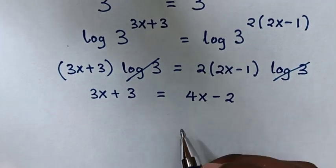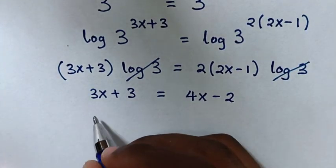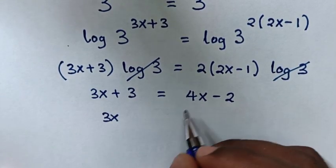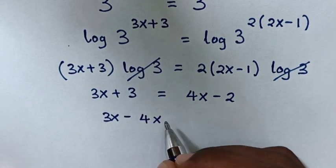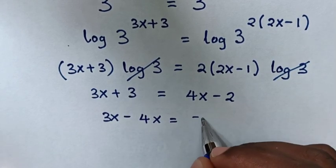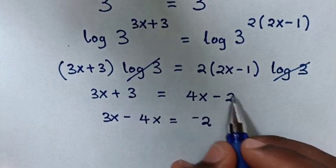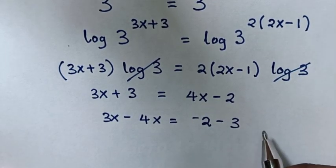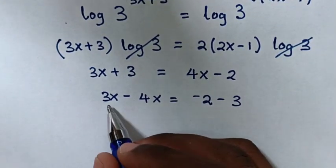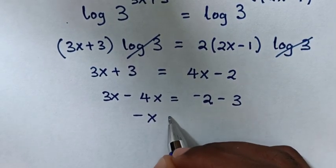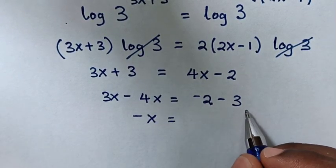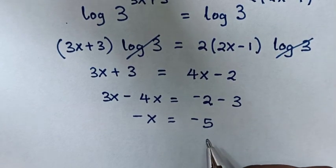We take this 4x to this side, so it will be 3x minus 4x is equal to negative 2. We take this 3 to this side, so it will be negative 3. Then 3 minus 4x is negative x is equal to negative 2 minus negative 3 is negative 5.